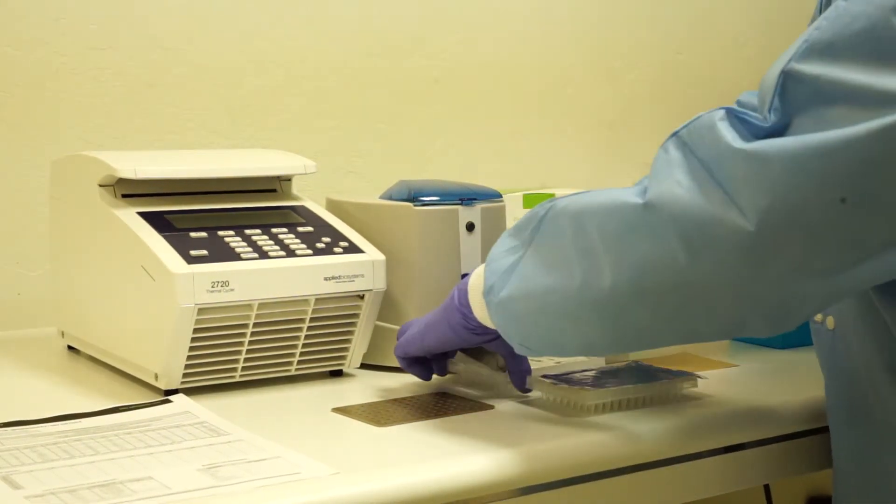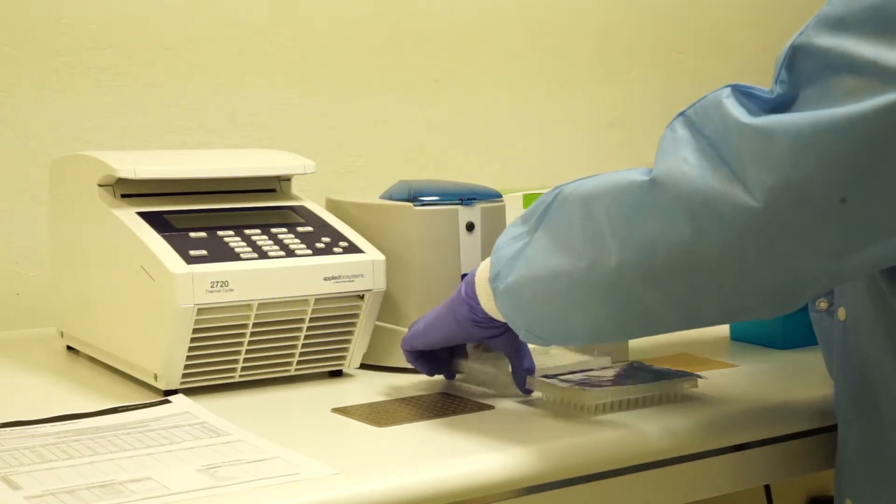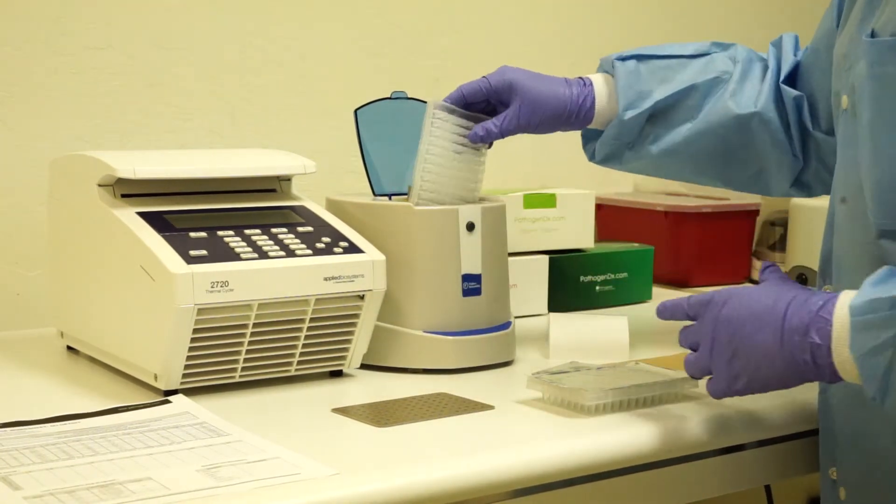Once you have sealed your labeling PCR plate, place in the centrifuge and briefly spin down.